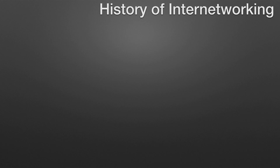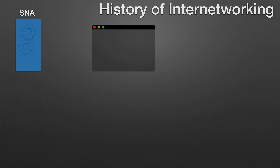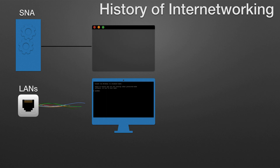The first networks were time-sharing networks that used mainframes and attached terminals. Such environments were implemented by both IBM's Systems Network Architecture (SNA) and Digital's Network Architecture. Local Area Networks (LANs) evolved around the PC revolution. LANs enabled multiple users in a relatively small geographical area to exchange files and messages, as well as access shared resources such as file servers and printers.